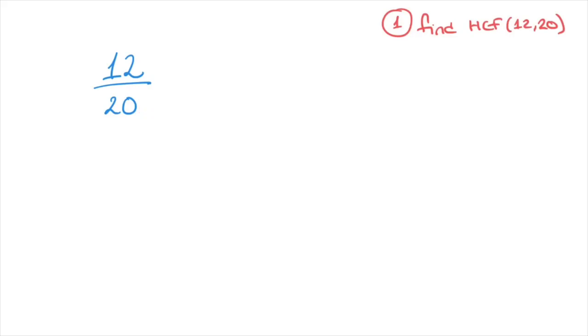The highest common factor is then the largest number that both lists have in common. Here's what I mean. The factors or divisors of 12 are 1, 2, 3, 4, 6, and 12.